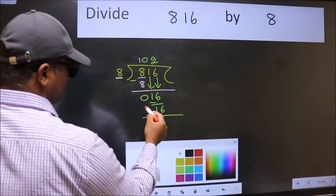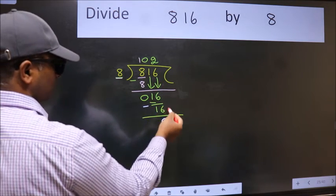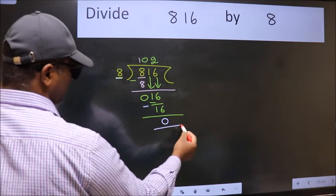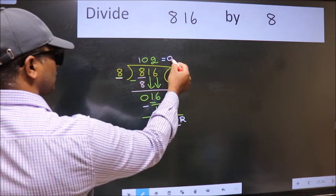Now, we subtract. We get 0. No more numbers to bring down. So, we stop here. This is our remainder and this is our quotient. This is our final answer. Thank you.